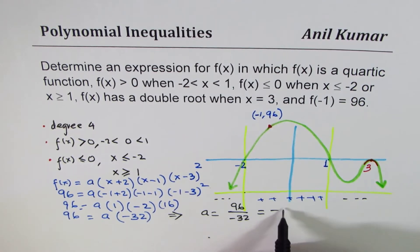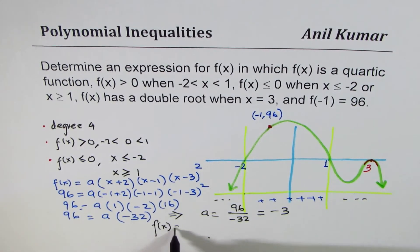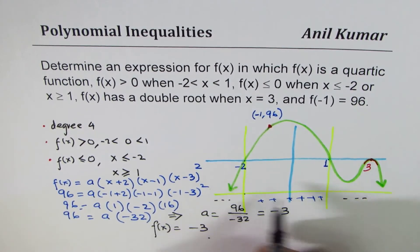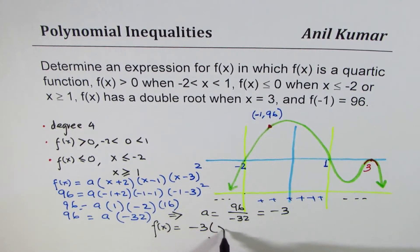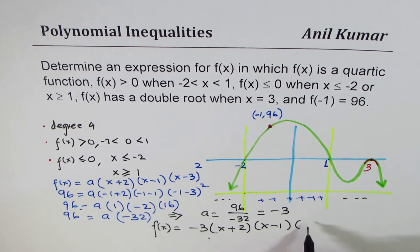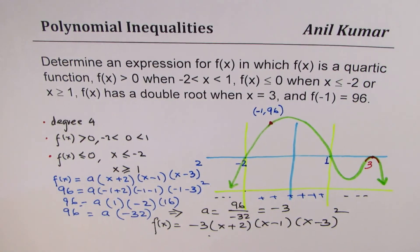So, once we get the value of a, we can write down our function f(x) as equal to minus 3, rest factors (x + 2)(x - 1)(x - 3)². So, I hope this method is absolutely clear. Thanks for watching. And, all the best. Thank you.